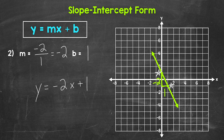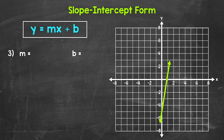Moving on to number 3, we have a line with a positive slope — it's moving upward as it moves from left to right. For this example, I don't have the points plotted like I did for numbers 1 and 2, but we're going to do the exact same thing. We just need to find those points. Our y-intercept is down here at negative 5. Then we need to find another point on the line that we can easily read — something at a grid intersection where we can clearly see the coordinates and find the rise and run.